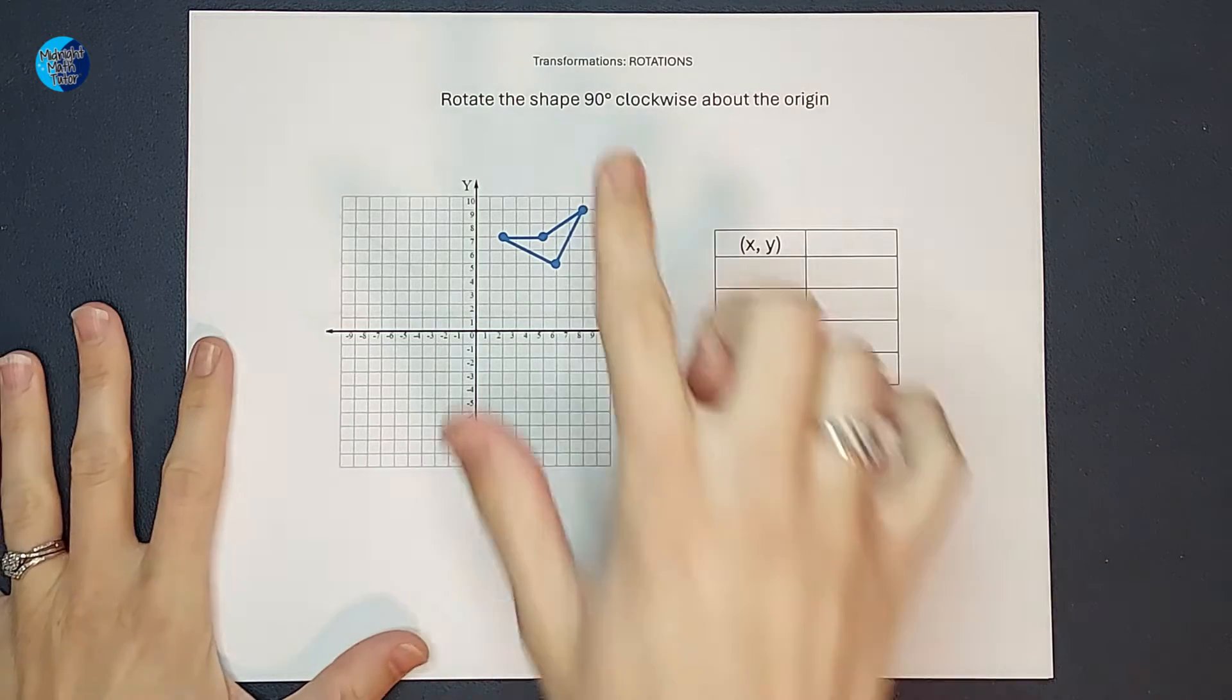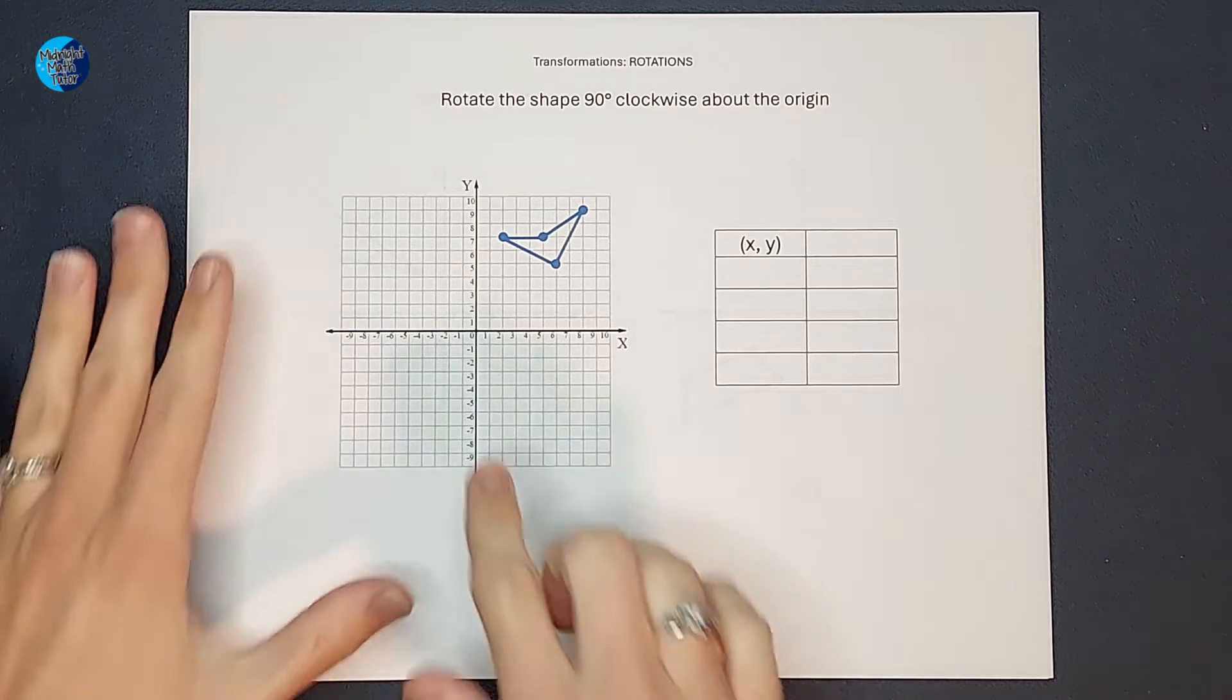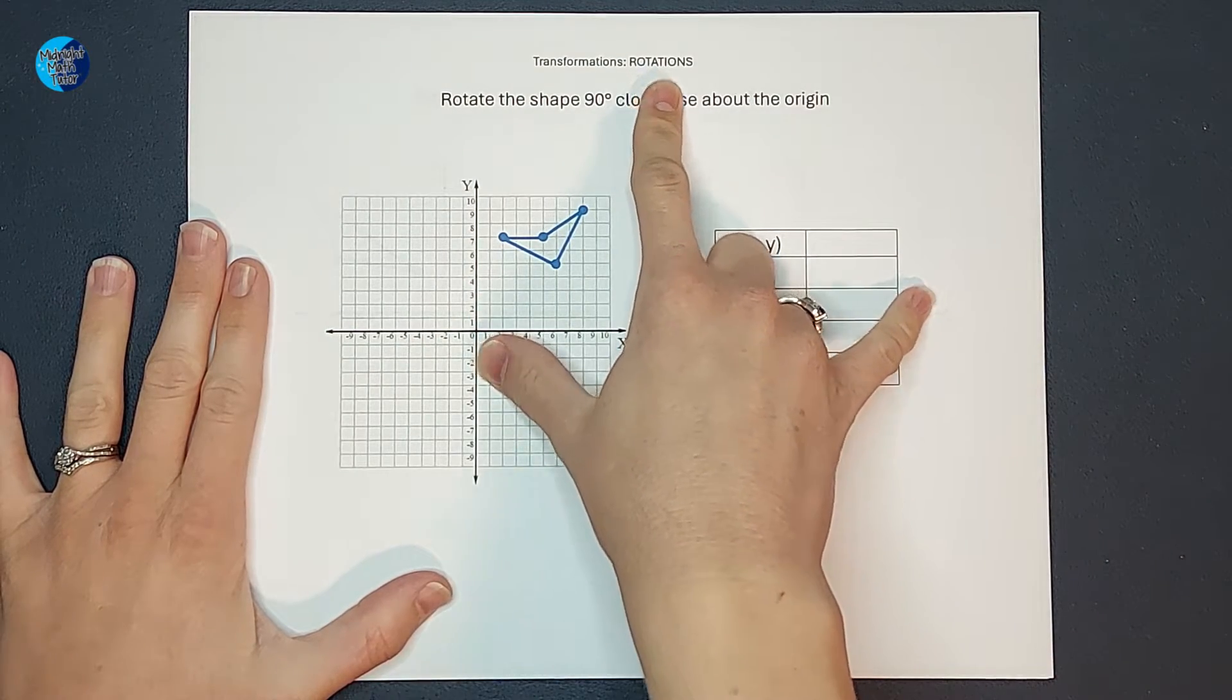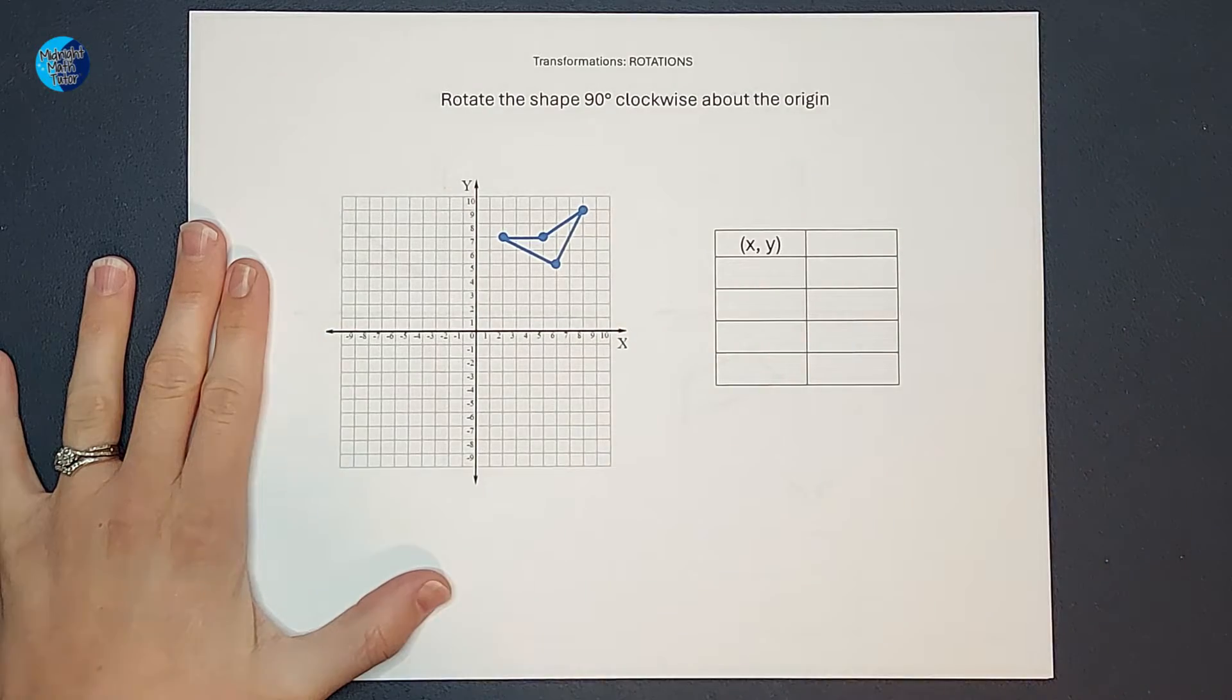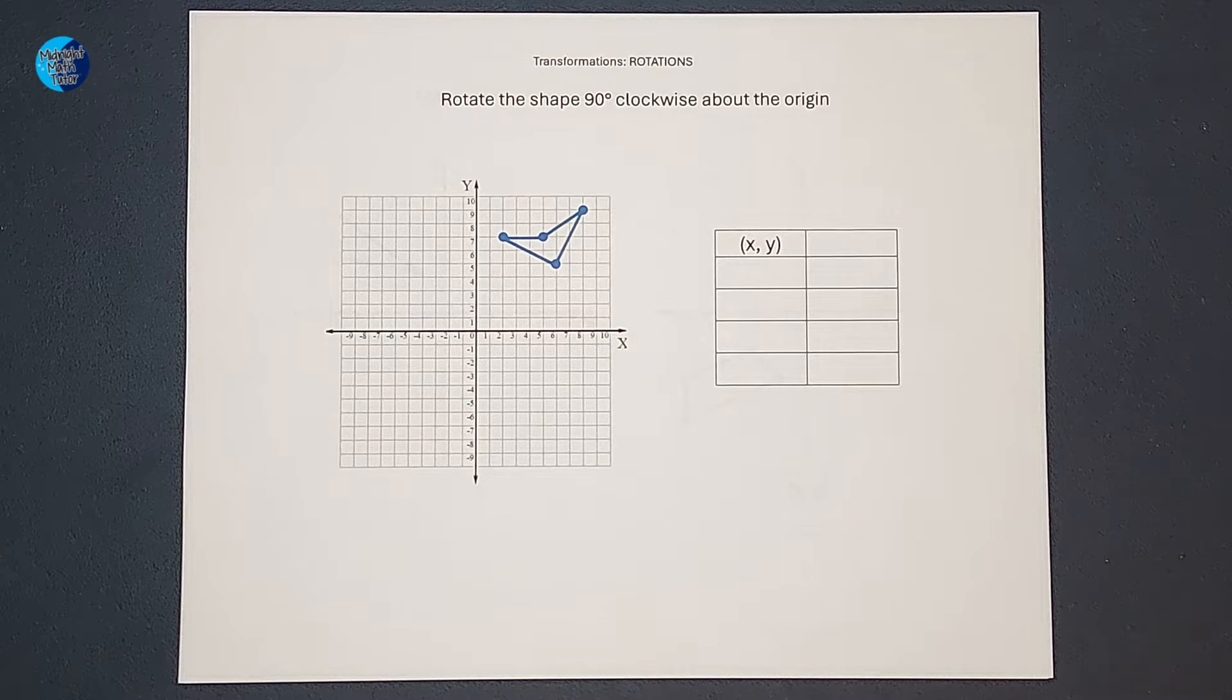Hey guys, we are talking transformations today, which is different ways that shapes can move around the coordinate plane. Now in this video, we are talking specifically about rotations. If you need a different type of transformation, I will link a playlist for you in the corner. In this video, we are going to talk about three different ways that we can figure out how to do a rotation.